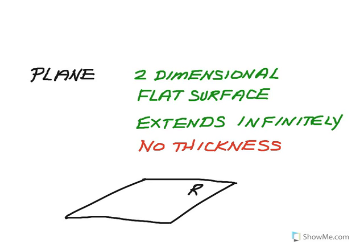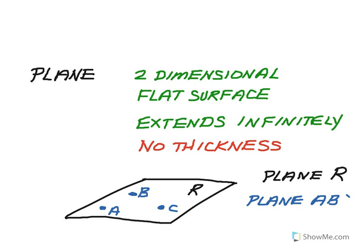So we name a plane, usually with a capital letter, so I could call this plane R, or with three or more points that are on the plane. So if I put three points, say I put points A, B, and C on this plane, on the surface of the plane, I could call this plane A, B, C. And the A, B, C could be in any order. And those are the three basic building blocks of geometry.